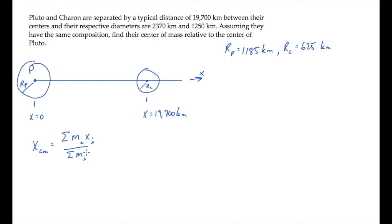The problem tells us we can assume they have the same composition, so their density is the same, and we can write their masses as their density times the volume. The mass of Pluto is its density times the volume of a sphere, four-thirds pi r cubed, for Pluto and the same thing for Charon where those two densities are the same.